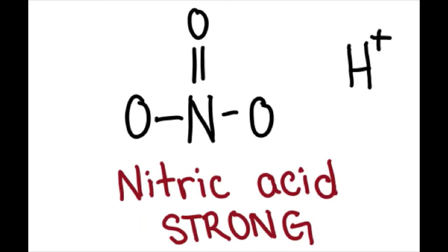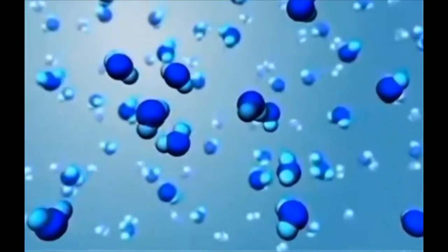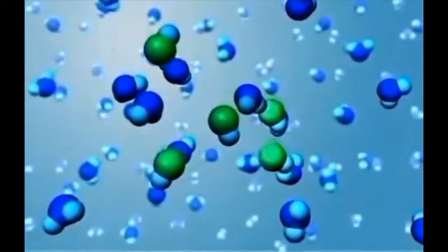Now we categorize acids into two categories, strong acids and weak acids. The determination of which category an acid belongs is determined by how much of the acid dissociates in water. Strong acids completely dissociate in water as shown in this clip.